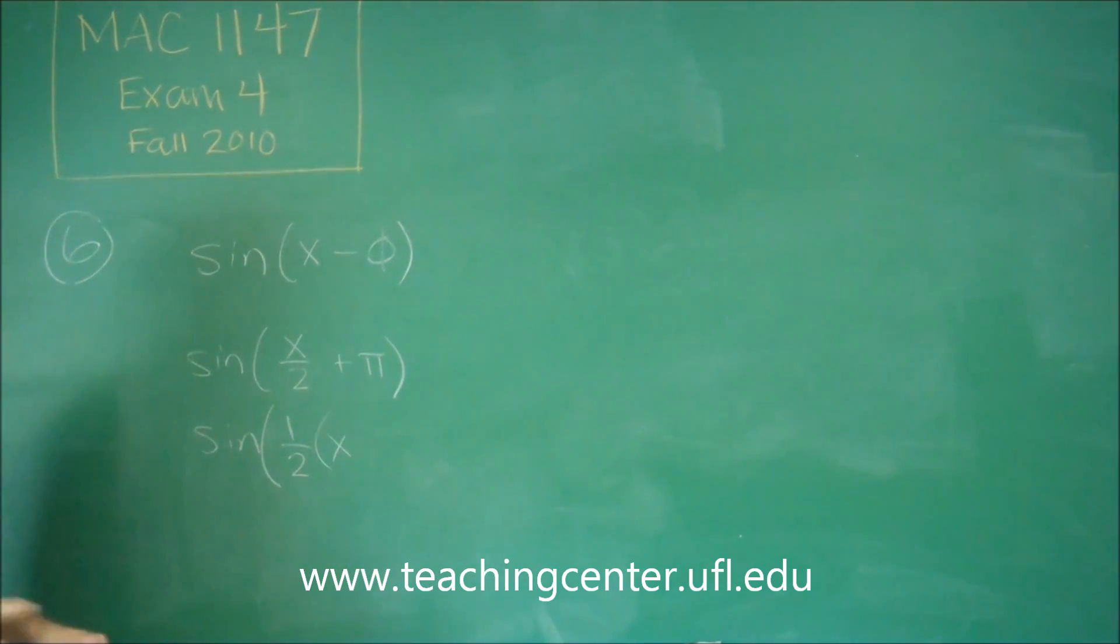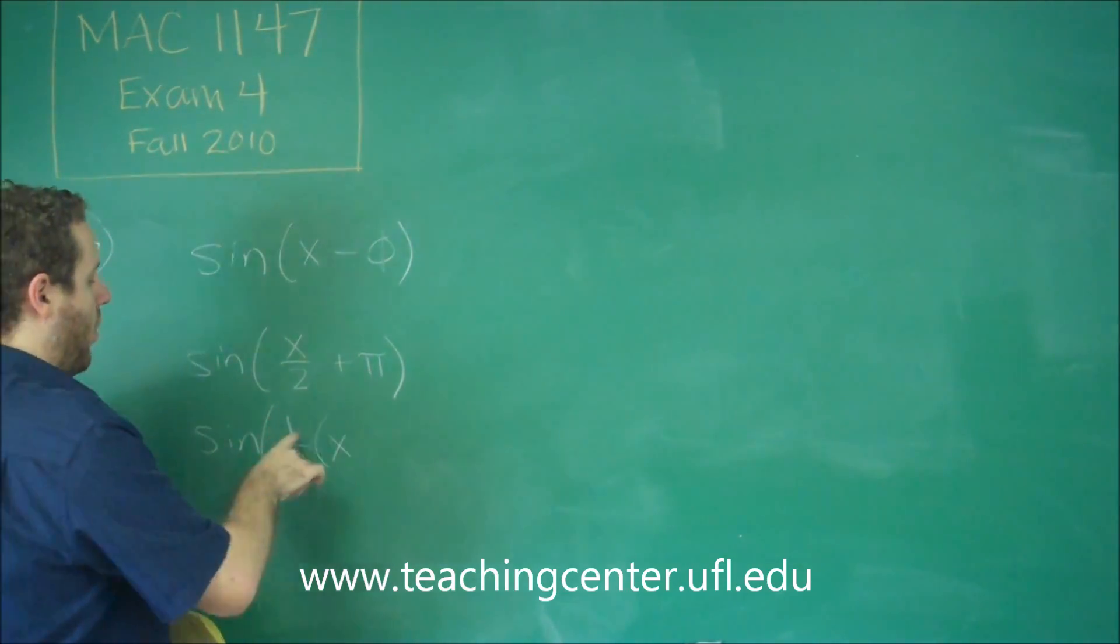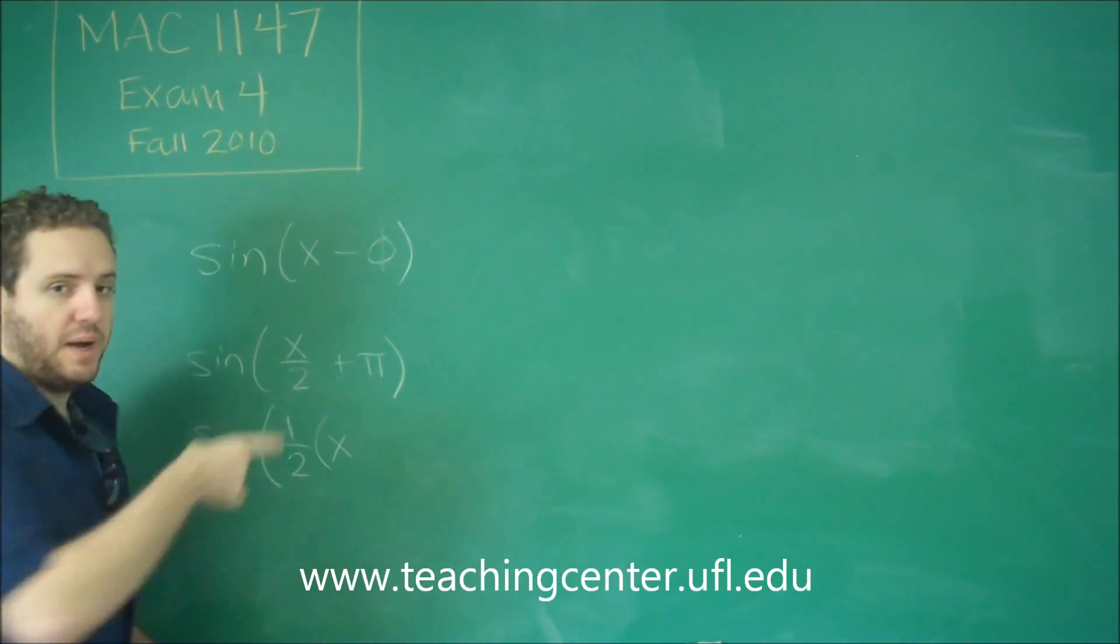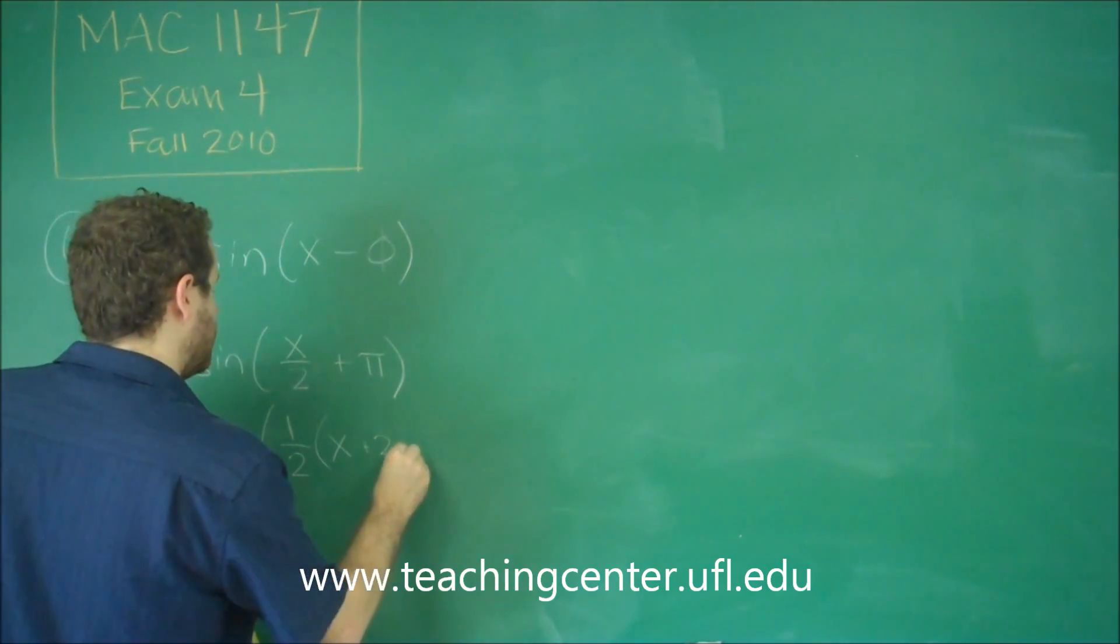That would leave us with X. Now you just have to think, what should go here? Well, when we distribute the one-half, we're supposed to get pi. So that would mean it has to be plus 2 pi.